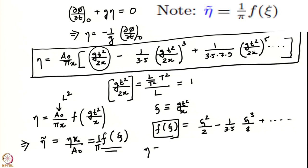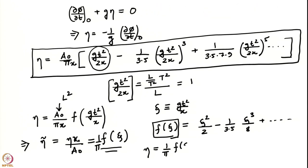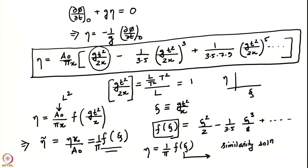This form, where eta is representable as a function of a single variable xi, is called a similarity solution. It contains a lot of information: as the interface evolves in time, if I take any snapshot at any given instant and scale it properly, I can collapse it onto one single curve f(xi). If I plot eta as a function of xi, I have a single curve containing information of eta at all points in space and all instants of time. However, this infinite series becomes slowly converging when gt²/x is large, so a more useful representation is needed.